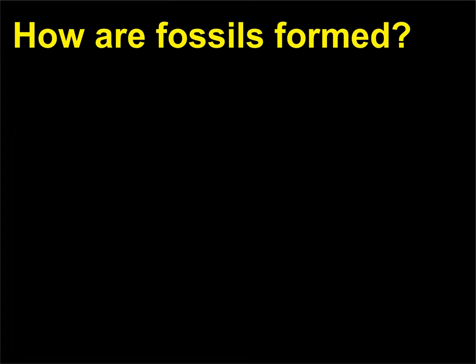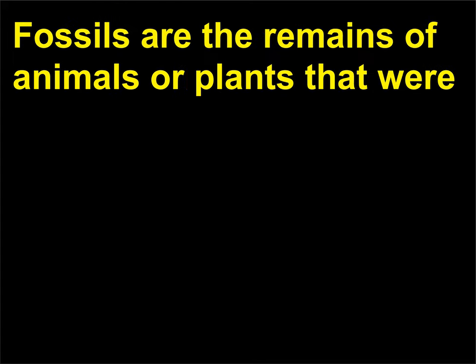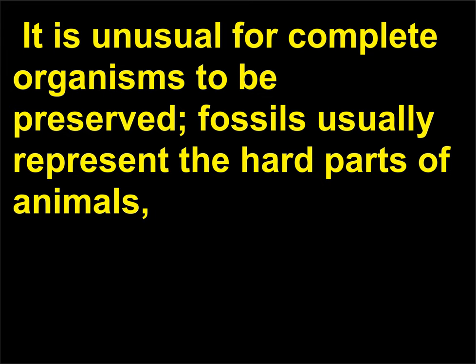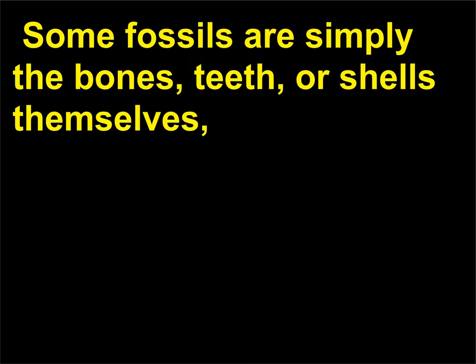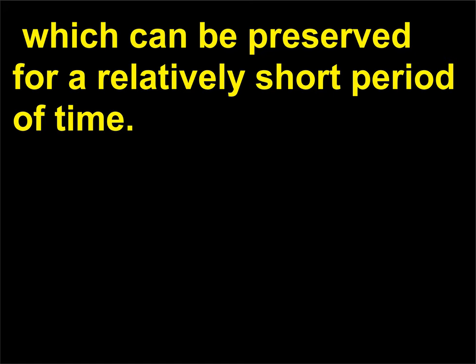How are fossils formed? Fossils are the remains of animals or plants that were preserved in rock before the beginning of recorded history. It is unusual for complete organisms to be preserved; fossils usually represent the hard parts of animals, such as bones or shells, and leaves, seeds, or woody parts of plants. Some fossils are simply the bones, teeth, or shells themselves, which can be preserved for a relatively short period of time.